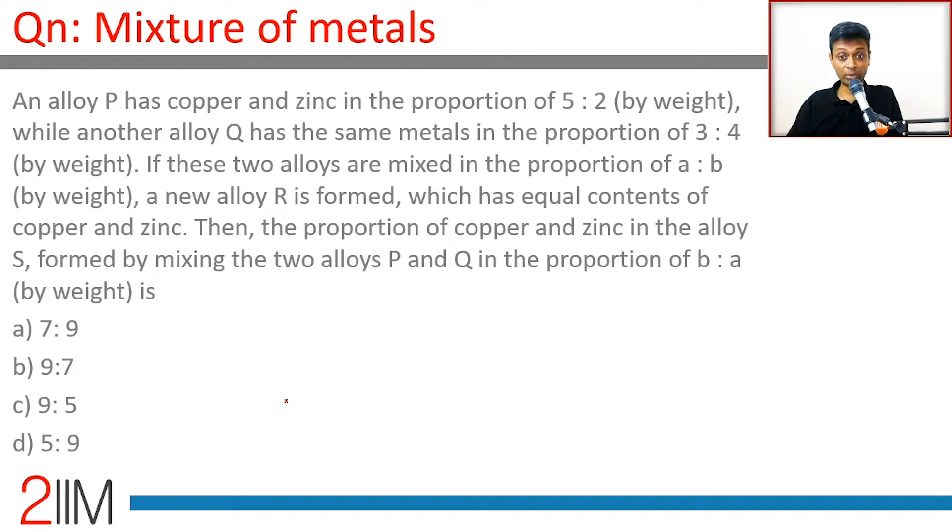An alloy P has copper and zinc in the proportion 5:2 by weight, while another alloy Q has the same metals in the proportion 3:4 by weight. If these two are mixed in the proportion a:b, a new alloy R is formed which has equal contents of copper and zinc.